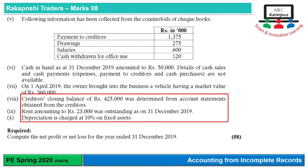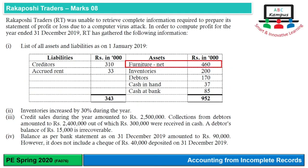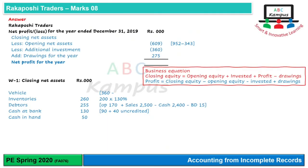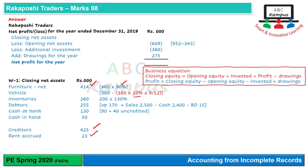Creditors ka closing balance 425,000 aur rent outstanding 23,000 — yeh dono liabilities mein show honge. Depreciation 10% charge karni hai: furniture par poore saal ki depreciation — net value 460,000 × 90% = 414,000. Vehicle par 9 months ki depreciation: 360,000 × 10% × 9/12 = 27,000, so net vehicle value = 333,000. Ab humara data kaafi complete ho chuka hai.